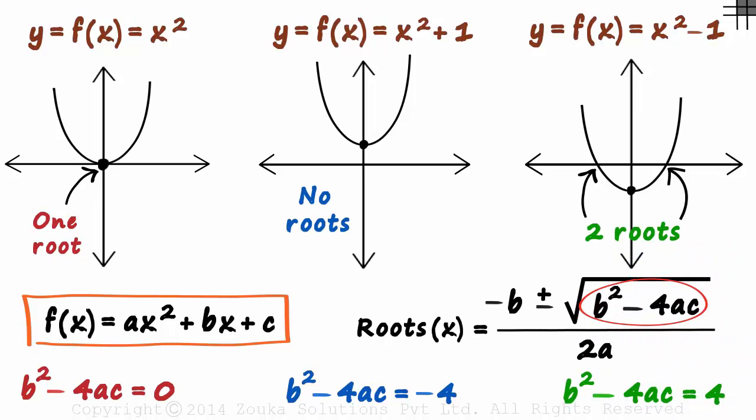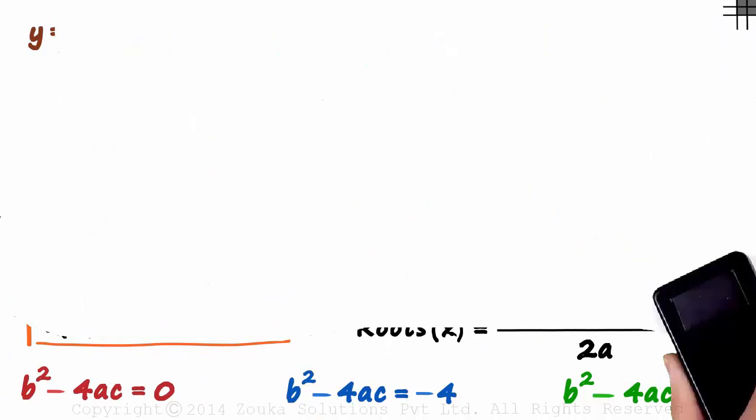Remember, to know how many roots an equation has, we just need to look at the value of b² - 4ac. Zero, then one root. Positive, then two roots. And negative, then no roots. Quadratic functions is the favorite topic of the paper setters. You really need to understand them well.